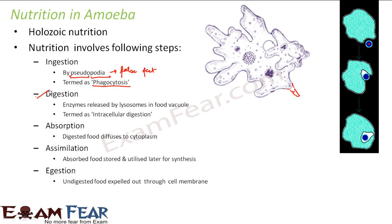The next step is digestion. The enzymes released by lysosomes enter the food vacuole. A food vacuole is formed by the end of the ingestion process, and then enzymes released by the lysosomes break down the complex food into simpler form. Lysosomes are cell organelles also known as suicidal bags because they release enzymes that break things down. This digestion takes place inside the food vacuole and is known as intracellular digestion, because the process takes place within the cell.